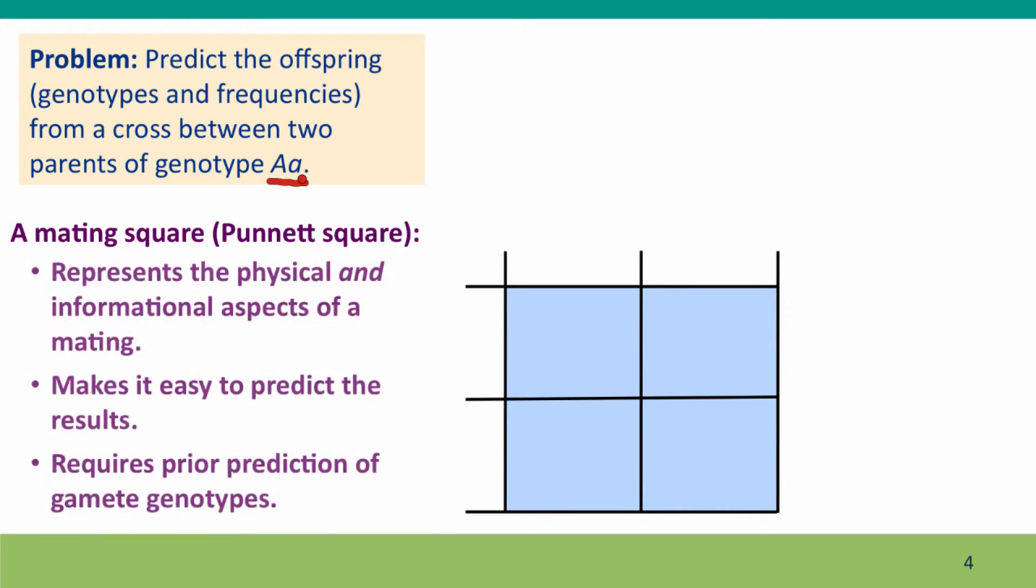So we're going to use a mating square. And that square diagram accomplishes several things. It represents the physical aspects of mating, the physical coming together of the gametes, and it represents the informational aspects of the mating, the actual genotypes of those gametes. In doing so, it makes it easy to predict what the genotype of each kind of progeny is going to be. It also makes it easy to keep track of the proportions. The one factor to remember, though, is that you have to first predict the gamete genotypes before you can use the mating square.